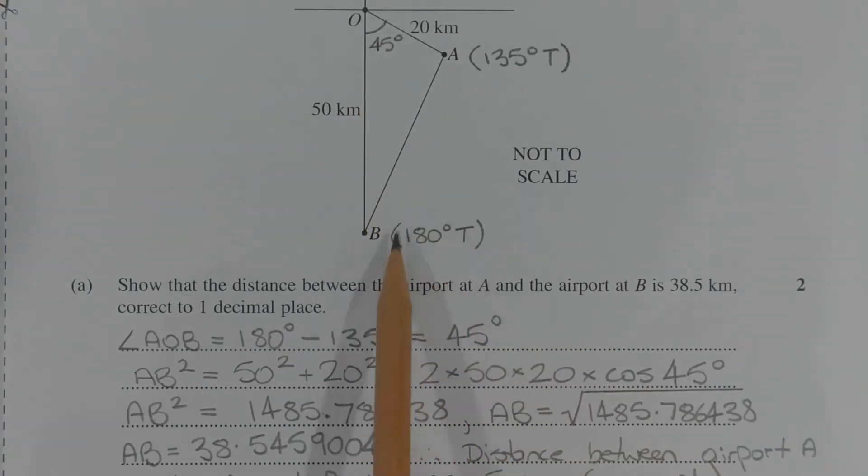If we start off with 180 degrees and subtract 135 degrees, the difference between these two bearings will give the size of this angle here. So angle AOB is equal to 180 degrees minus 135 degrees, which equals 45 degrees, and it's marked on the diagram.